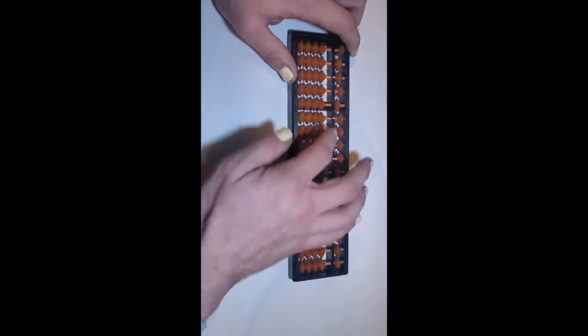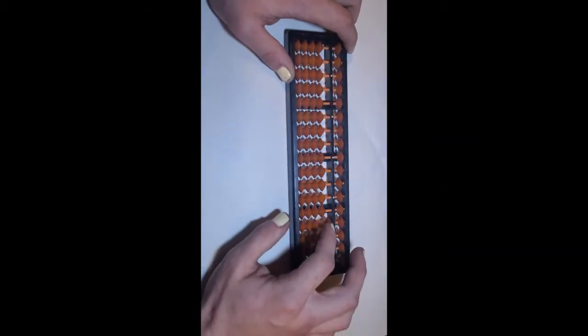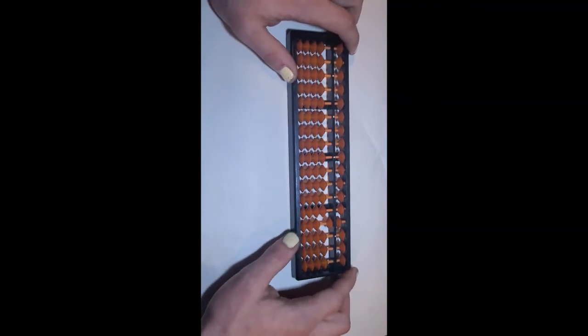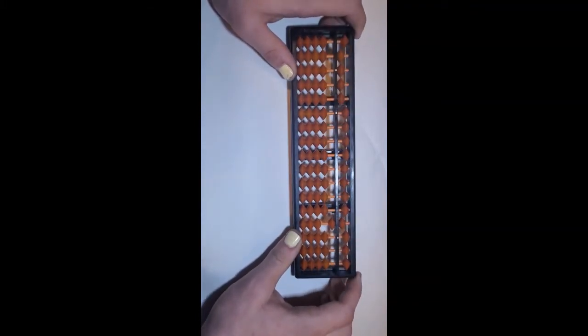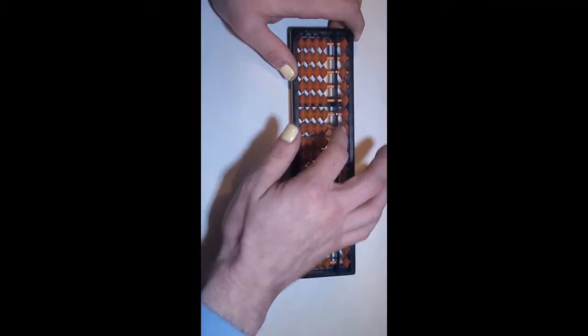One thing that's important to remember when using a Soroban for calculation is the beads have to be touching the cross piece, otherwise they do not count toward your total. So that's an easy way to know what is being counted and what is not being counted.